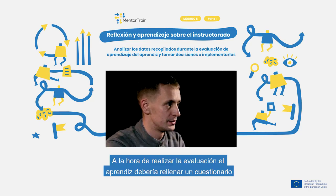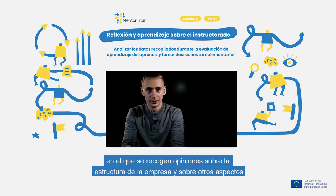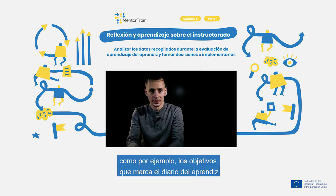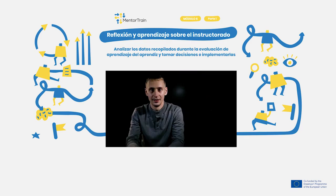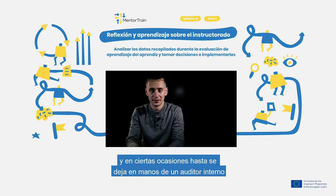To get an assessment, the student usually compiles a report. For example, it can consist of an overview and analysis of the chosen organization and its structure, a statement of the apprentice's goals, a daily diary of the apprenticeship, and a final analysis and self-reflection about one's experience. The report is usually supplemented by an evaluation form filled by the company's representative. In many cases, students present their analyses to an assessment committee.